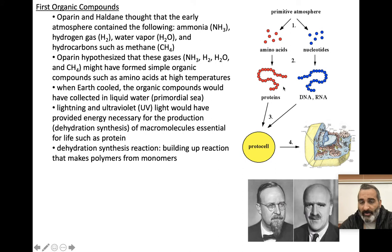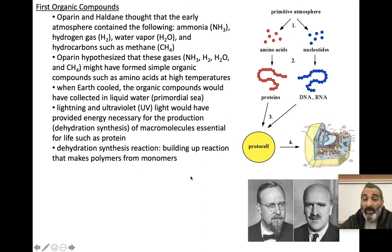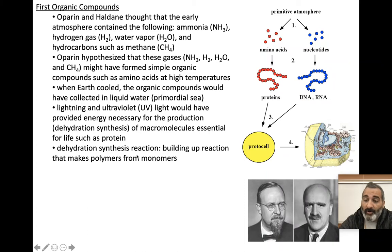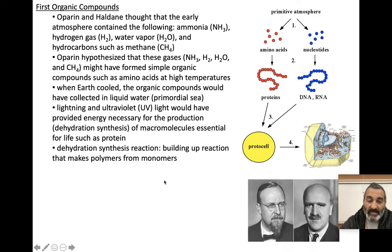That's what these guys believed — they gave the idea of how the first building blocks of life could have shown up. Not necessarily how life showed up, but how the building blocks did. You need the building blocks first in order to start building bigger macromolecules. First you have amino acids and nucleotides, then you can build proteins and DNA, then you can begin the beginning of a cell called a protocell, which maybe over time becomes a cell. That's the belief of what happened.